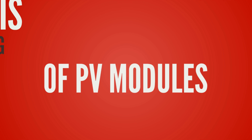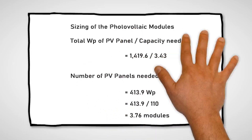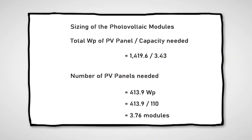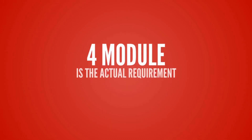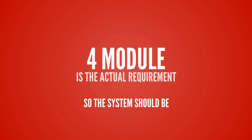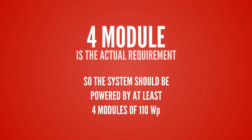Now let's go to the sizing of PV modules. Sizing the PV modules will help you find out the appropriate size of PV module that will produce an amount of power suitable for your daily consumption. To find out the sizing of the module, you need the total peak watt produced needs. Calculate the watt peak rating and the number of PV panels for the system. The actual requirement is 4 PV modules of 110 watt power.